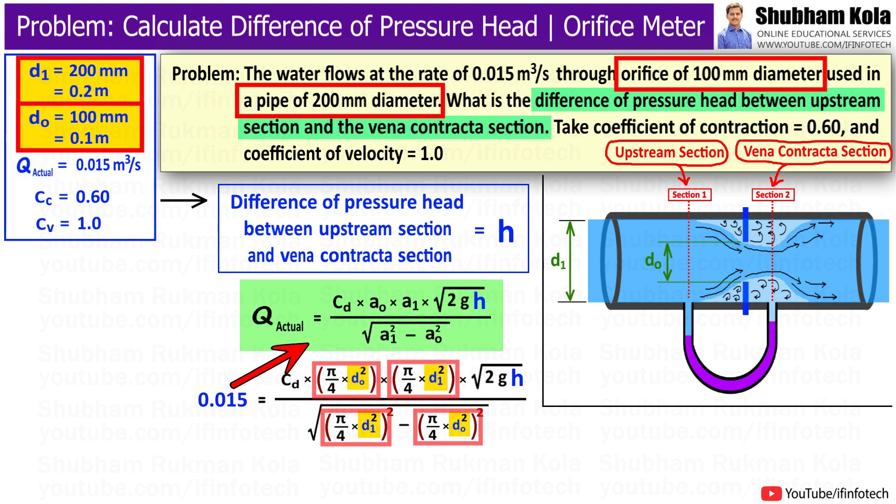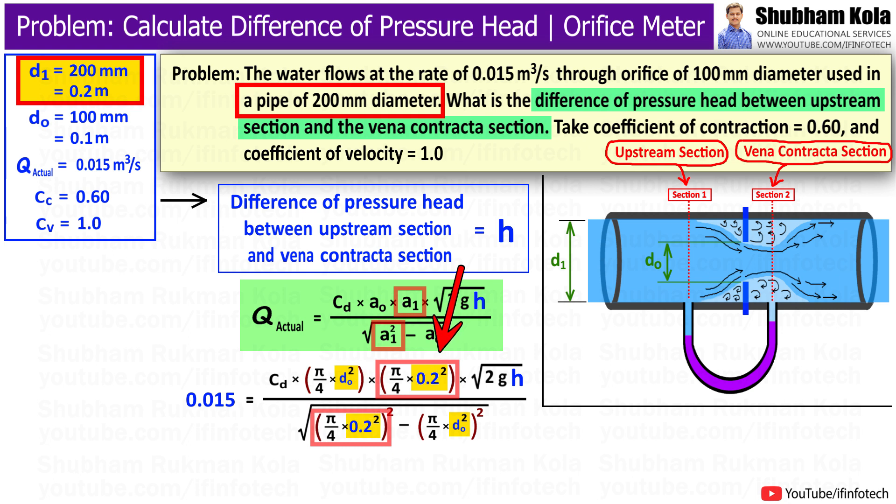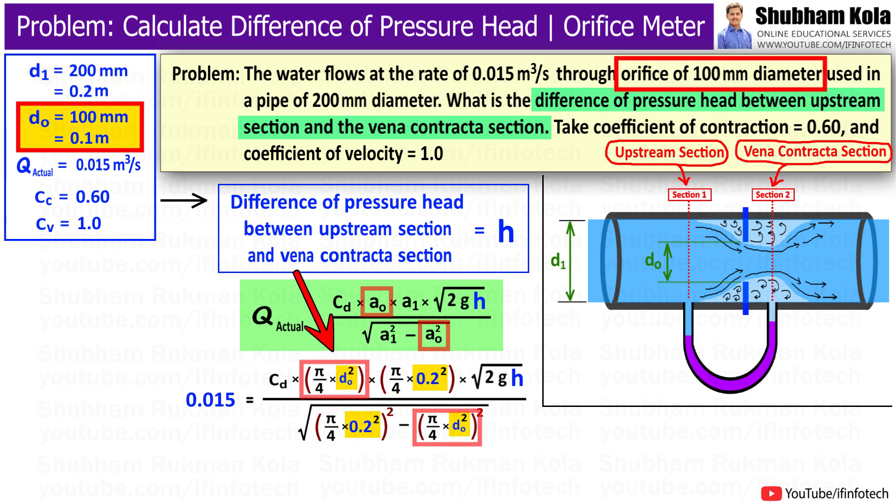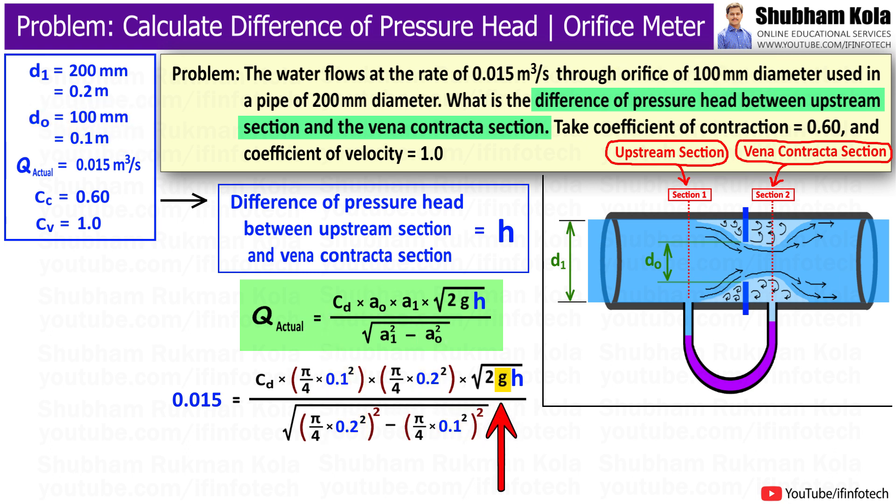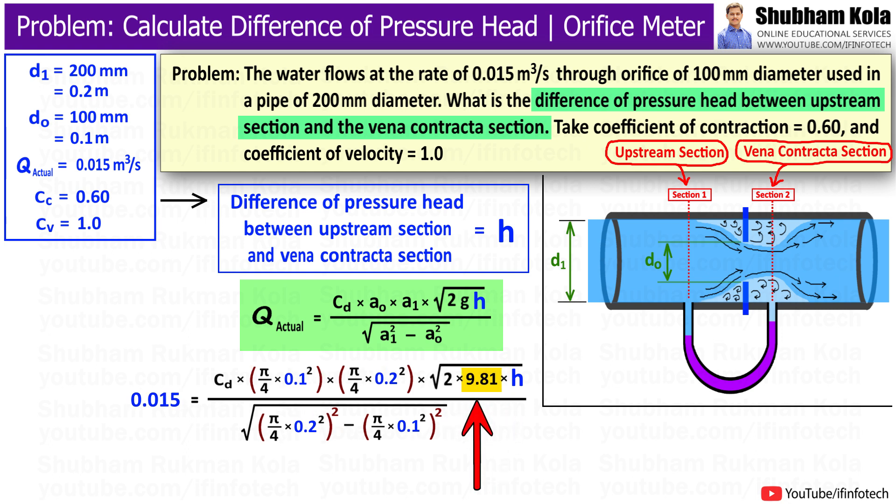Hence in the discharge formula, a₁ will be π/4 d₁² i.e. 0.2 squared, and a₀ will be π/4 d₀² i.e. 0.1 squared. Here g is acceleration due to gravity, 9.81.